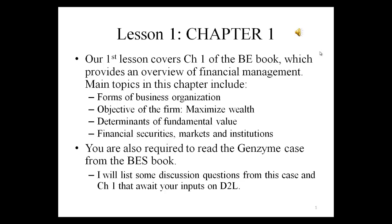Main topics in this chapter include different forms of business organizations, objectives of the firm, determinants of the fundamental value of a company, and we'll also talk about some basics of financial securities, financial markets, and financial institutions. After studying this chapter, you are also required to read the Jim Zymes case from the BES casebook.